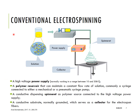Now it is time to see how electrospinning makes fibers. It is mainly comprised of four parts: a high voltage power supply, a polymer reservoir that can maintain a constant flow rate of solution — usually a syringe pump is used for that — a conductive spinneret as the polymer source connected to the high voltage, and a conductive substrate, normally grounded, that serves as a collector for the electrospun fibers.